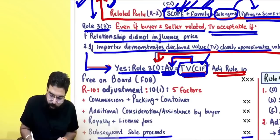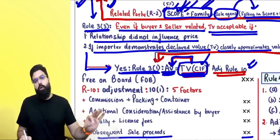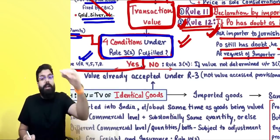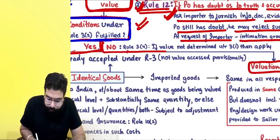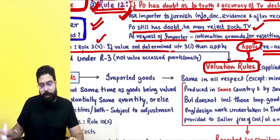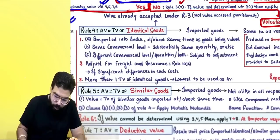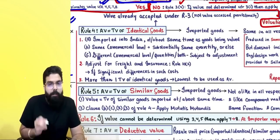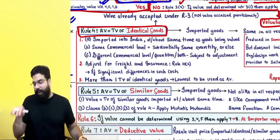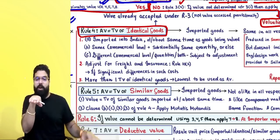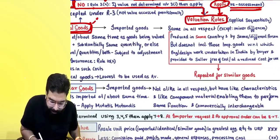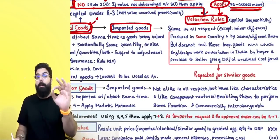If Rule 3(2) conditions are satisfied, Rule 3(1) says the acceptable value equals transaction value, subject to adjustment under Rule 10. If Rule 3(2) conditions are not satisfied, Rule 3(4) says: if value cannot be determined under Rule 3(1), apply the valuation rules. The first valuation rule is Rule 4, which says: take the transaction value of identical goods. Identical goods means imported goods — not domestic goods.